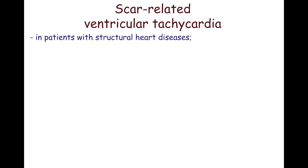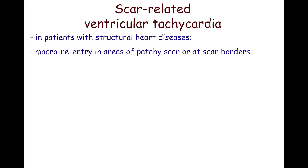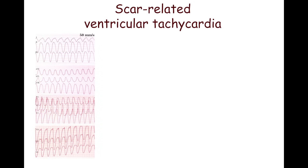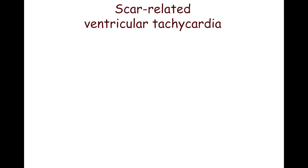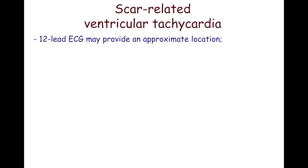Scar-related ventricular tachycardia is seen in patients with structural heart diseases such as myocardial infarction, cardiac sarcoidosis, and dilated cardiomyopathy, and is caused by myocardial macro-reentry in areas of patchy scar or at scar borders. It is usually monomorphic. The QRS complex morphology varies because the scar shape varies in each patient. Although the exact location of the scar-related VT exit site may be determined only during electrophysiologic study, the 12-lead ECG may provide an approximate location.